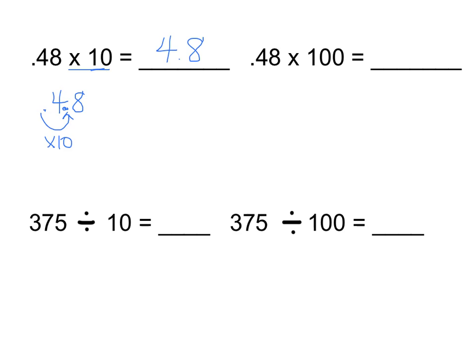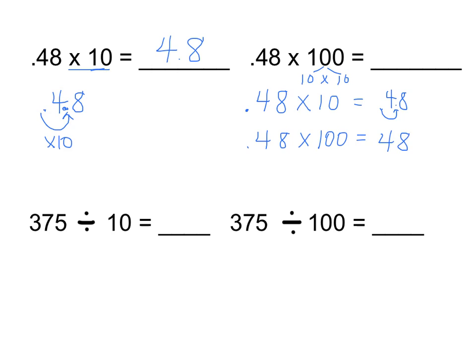I can do the same thing with 48 hundredths times 100. Knowing that 100 is made up of 10 times 10, I can do 48 hundredths times 10, moving my decimal place to the right once, and then times 10 again, moving the decimal place two places to the right in total — one for each multiplication of 10. I added a zero there as a placeholder. So my final answer is 480.